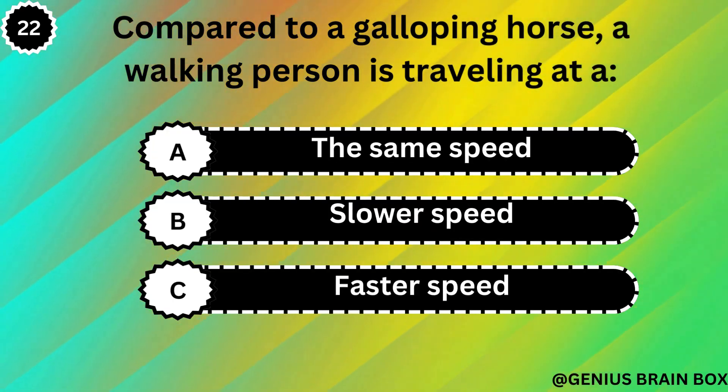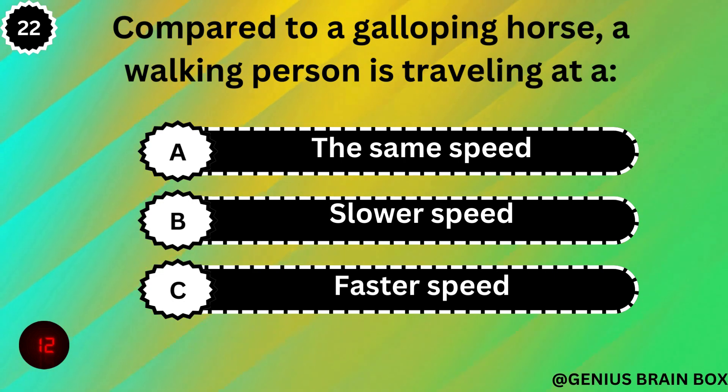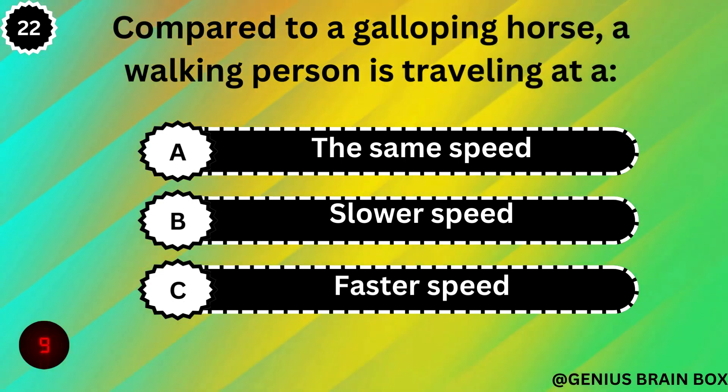Compared to a galloping horse, a walking person is travelling at: the same speed, slower speed, or faster speed.